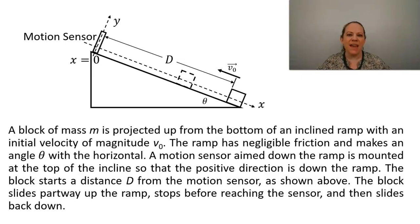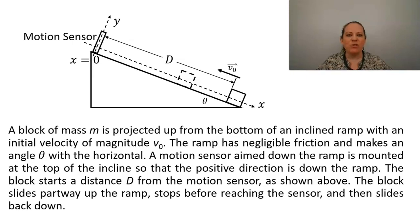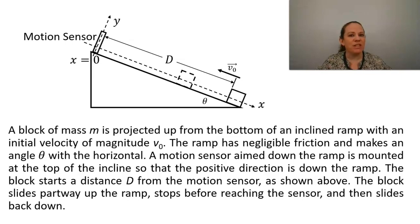A block of mass M is projected up from the bottom of an inclined ramp with an initial velocity of magnitude V0. The ramp has negligible friction and makes an angle theta with the horizontal. A motion sensor aimed down the ramp is mounted at the top of the incline so that the positive direction is down the ramp. The block starts a distance D from the motion sensor as shown. The block slides partway up the ramp, stops before reaching the sensor, and then slides back down.